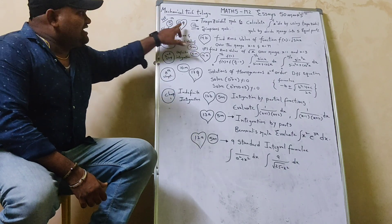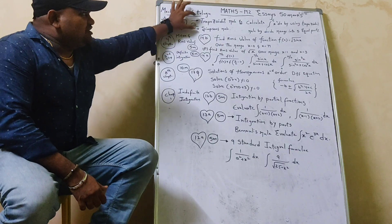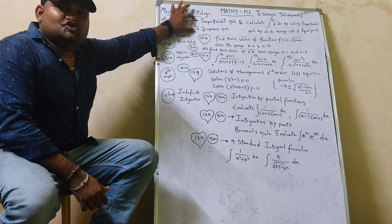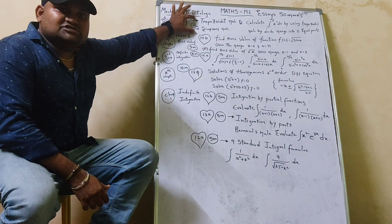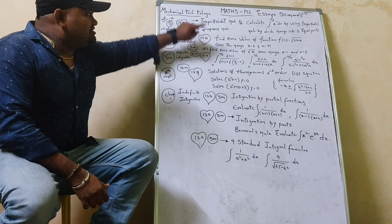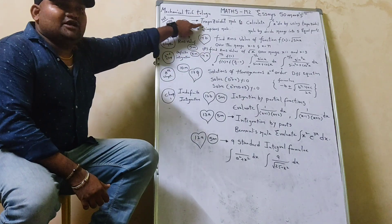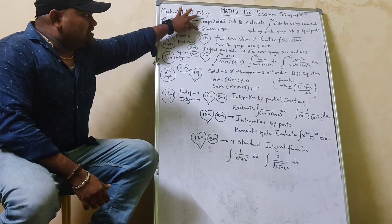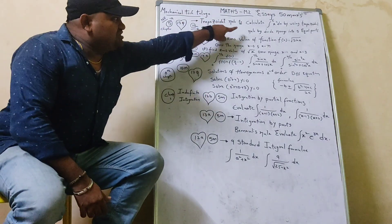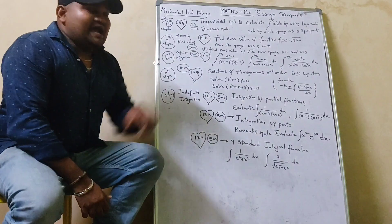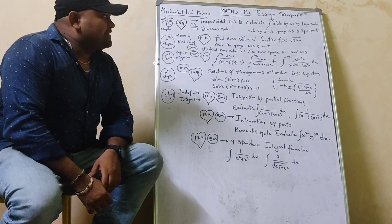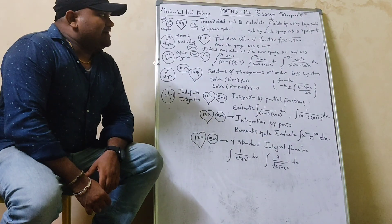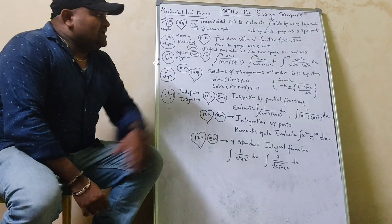We have numerical integration. We have two questions, and there is another question — 90% of the question. There are two examples of the trapezoidal rule. Calculate integral x squared dx by using the trapezoidal rule by dividing the range into 5 equal parts.